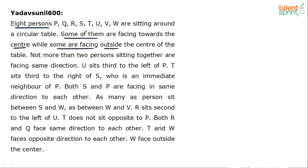What does 'some' mean? It can be 4 persons facing center and 4 outwards. It can be 5 persons facing center and 3 outwards, or any other combination. It could be 7 persons facing center and only 1 facing outwards. All that is possible — that's the complexity. We do not know exactly how many persons are facing center.